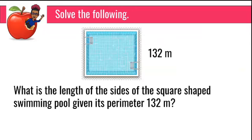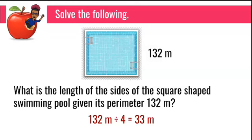What is the length of the sides of the square-shaped swimming pool, given its perimeter of 132 meters? If someone walks the distance around this swimming pool, they would be walking 132 meters. We divide 132 by 4 equal sides and get 33. So each side of the square measures 33 meters. We can verify by adding 33 four times, or multiplying 33 by 4, to confirm we get back to 132.